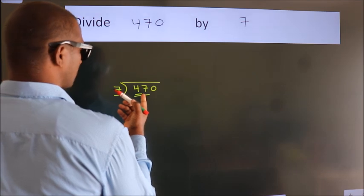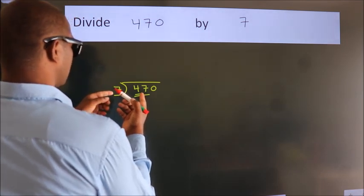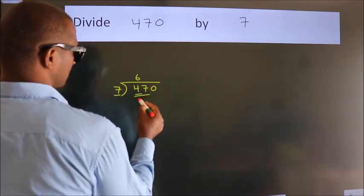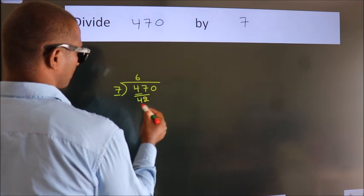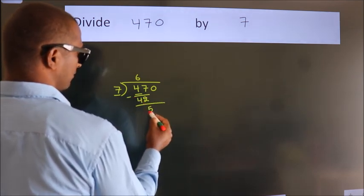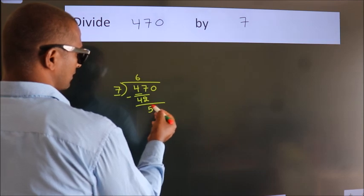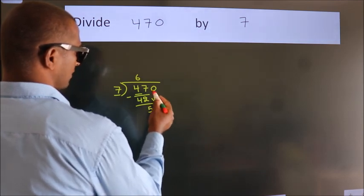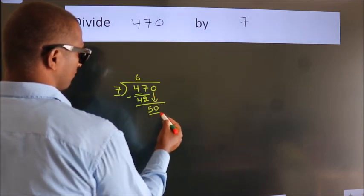A number close to 47 in the 7 table is 7 times 6, which is 42. Now we should subtract. We get 5. After this, bring down the next number. So 0 down. So 50.